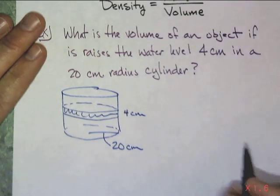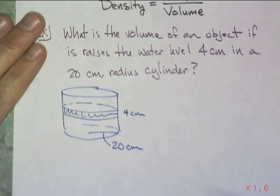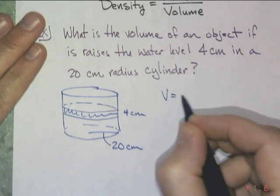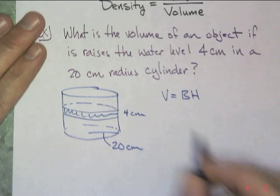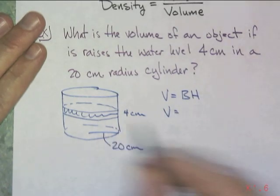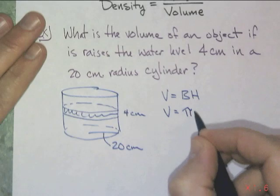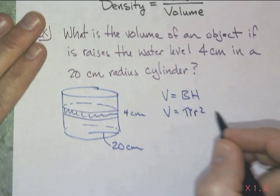And of course, the volume of a cylinder is nothing more than the area of the base times the height. Alright, and in this case, the volume—the base is πr² and the height is 4.